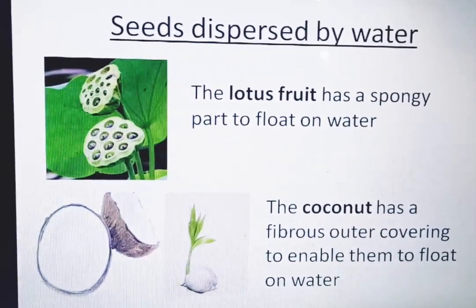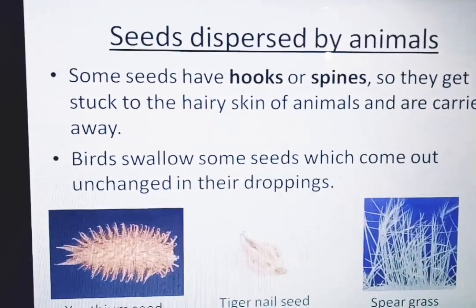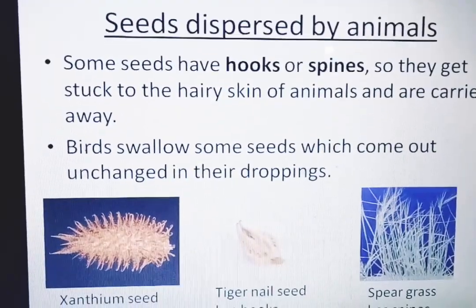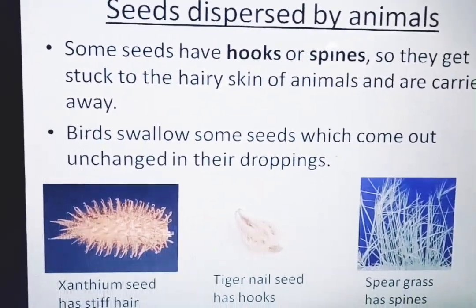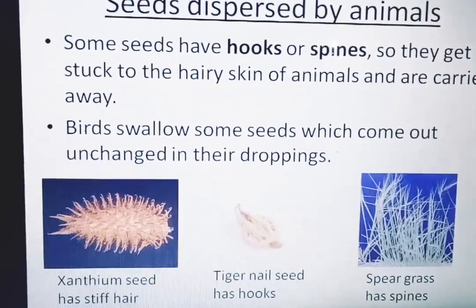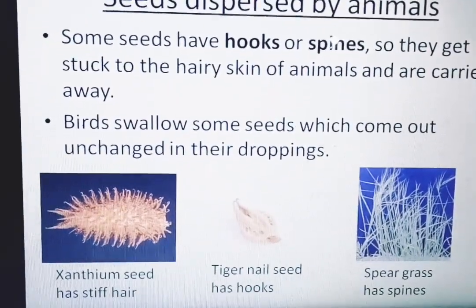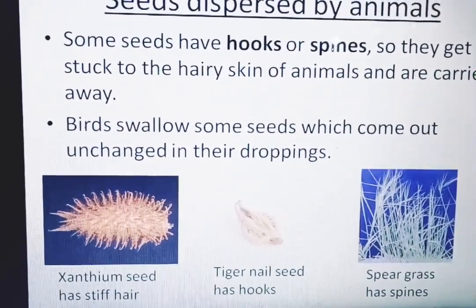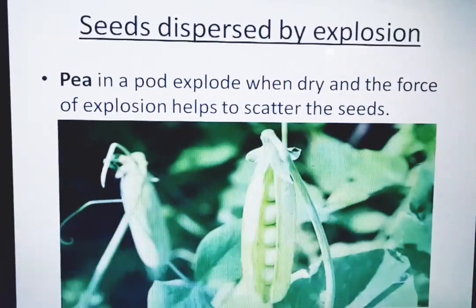Seeds dispersed by animals: some seeds have hooks or spines, so they get stuck to the hairy skin of animals and are carried away. Birds swallow some seeds, which come out unchanged in their droppings. Examples are the xanthium seed, which has stiff hair, tiger nail seed, which has hooked spines, and grass, which has spines.